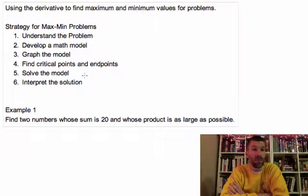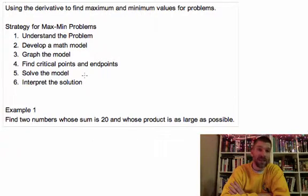You want to find critical points and endpoints. So if you're looking at the area of a box, the box can only be certain dimensions, and those would be your endpoints. You want to check those. You also want to be able to find where your derivative is equal to zero or does not exist. Those are critical points and can help you. And then you want to interpret what your solution is.